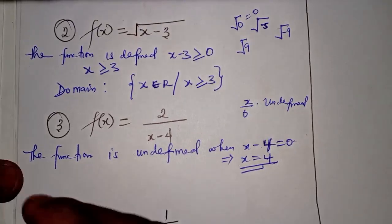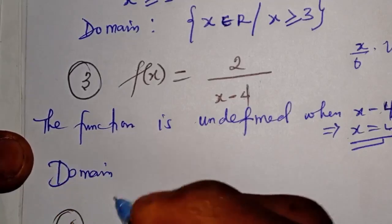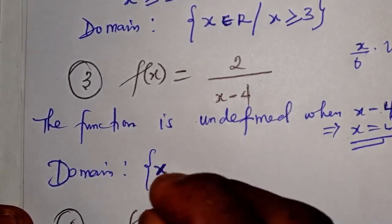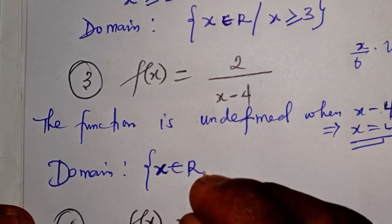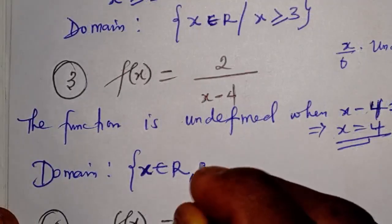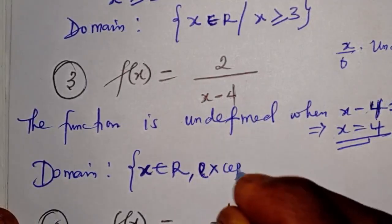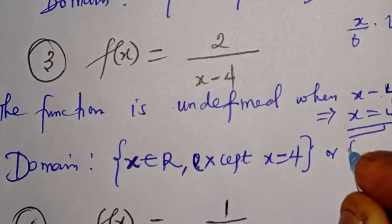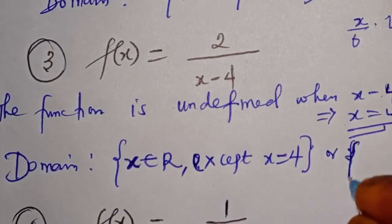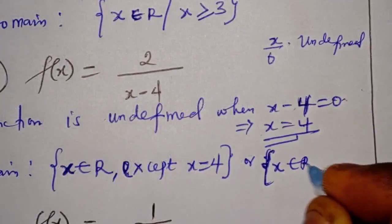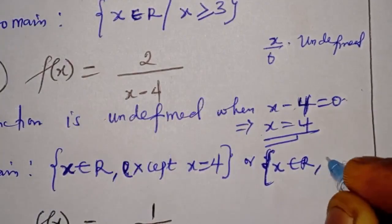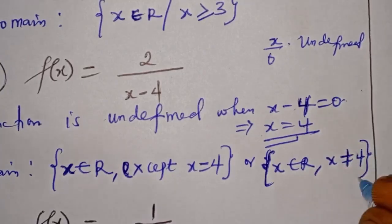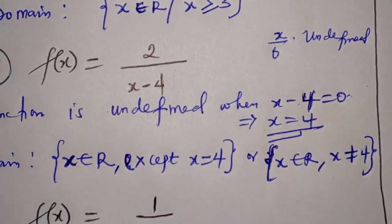The domain therefore is the set of numbers x which is a member of the set of real numbers, except x equal to 4. Or equivalently, the set of numbers x, members of the reals, such that x is not equal to 4. This is the domain of the function.